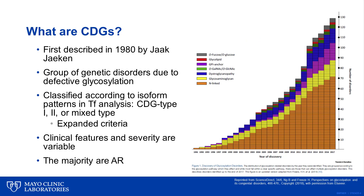First described in 1980 by Yap Yakin, CDG were initially defined as defects in the N-glycosylation and classified according to glycan isoform patterns seen in transferrin protein analysis, termed type 1, type 2, and mixed. However, CDG is now applied to any individual with a defect in any glycosylation pathway, so the traditional classifications, while still valid, do not sufficiently account for all the known CDG.